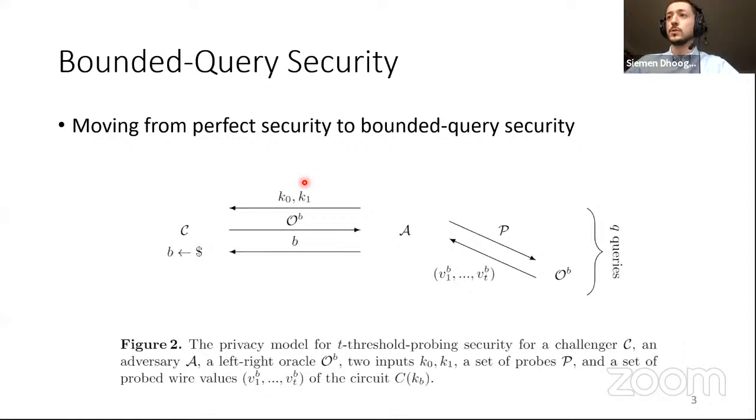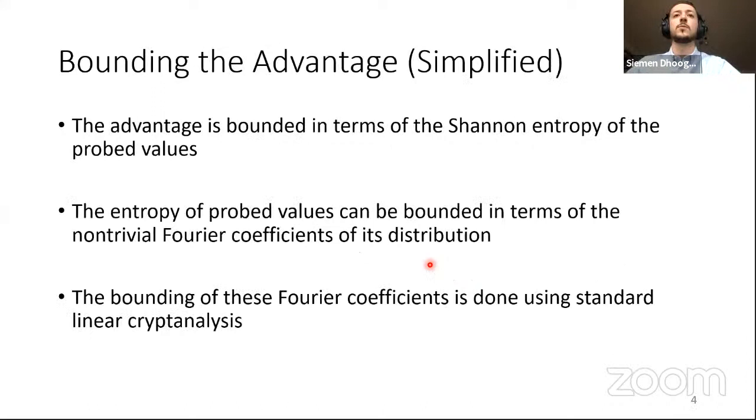We use a bounded query security model. This is a left-right security model where the adversary picks two secrets. The challenger picks one of those two, creates a masked circuit, gives that to the adversary, which can probe this masked circuit. The circuit gives back the probed values. And the advantage of the adversary is decided by the entropy of those probed values. So what we want to show is that those probed values are uniformly randomly distributed. And we show that this entropy can be bounded in terms of the non-trivial Fourier coefficients of its distribution. You might think, how is that useful? We can actually give a bound on these Fourier coefficients using standard linear cryptanalysis. So basically it just reduces to finding trails in the masked cipher.